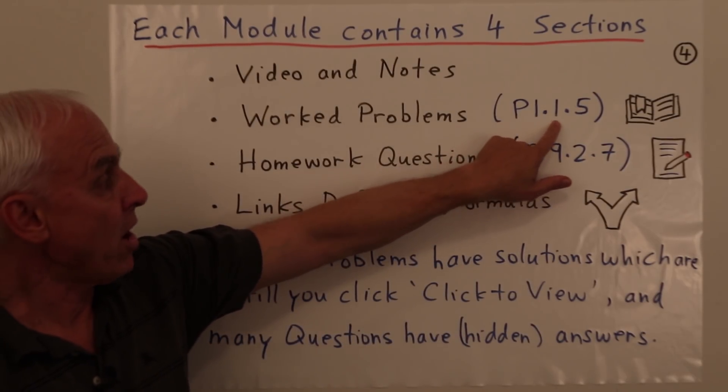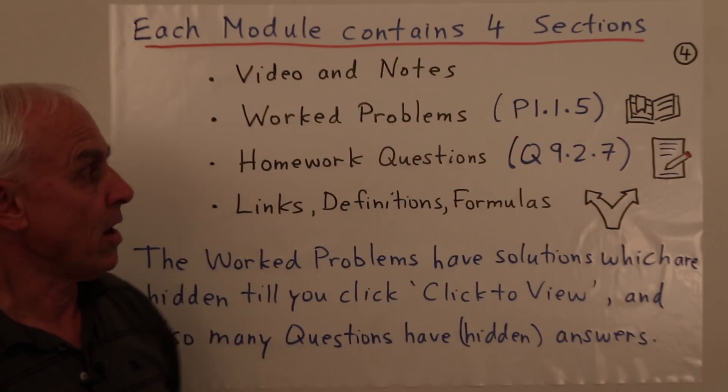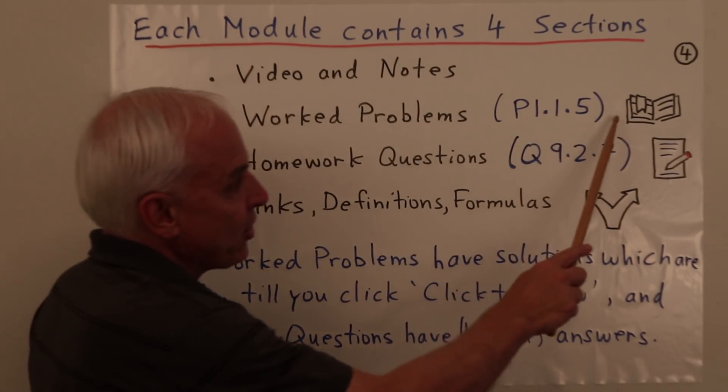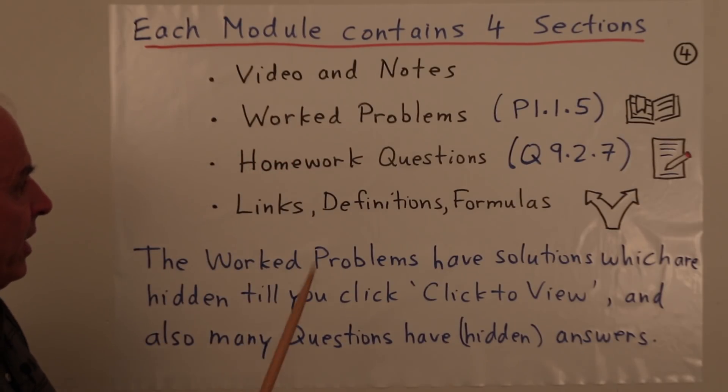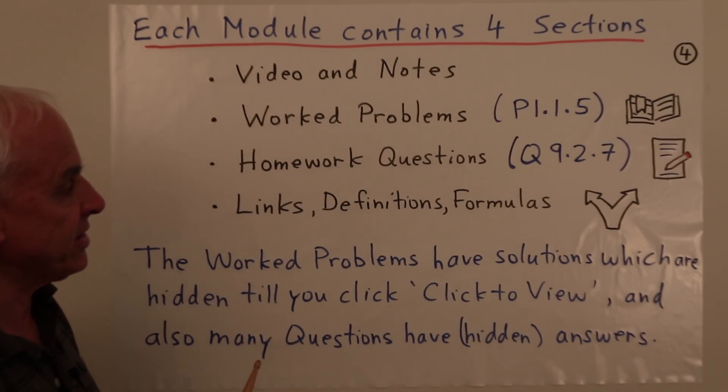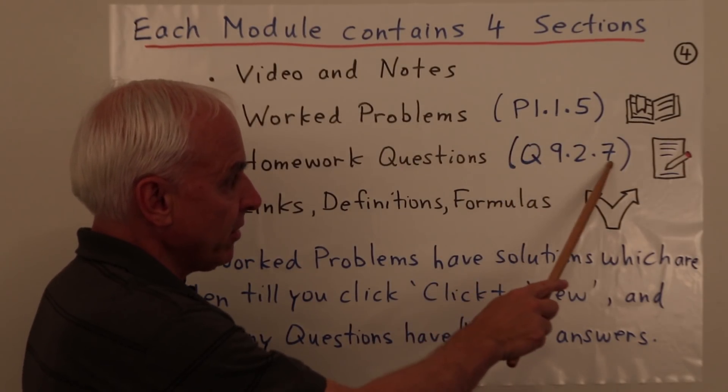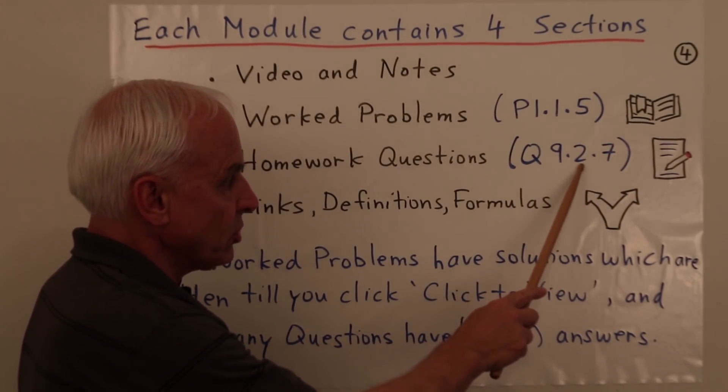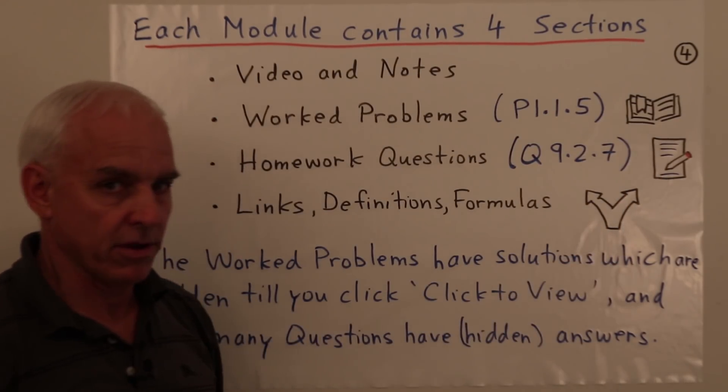The problems are typically organized this way. P stands for problem and then 1.1.5. That means it's chapter one, module one, and problem five in that module. There's a little icon here that signifies worked problems. Then there's a homework questions section. Homework questions denoted by Q, also labeled in the same way: chapter, module, and then the question number. The icon for that is a little paper with a pencil.